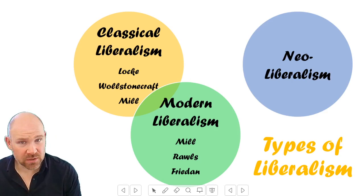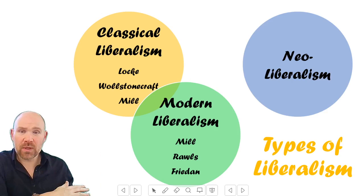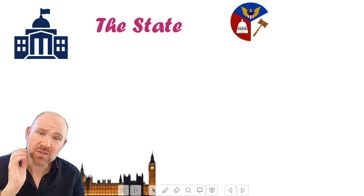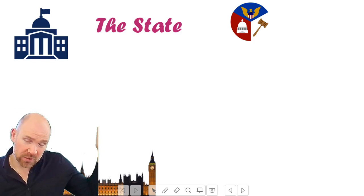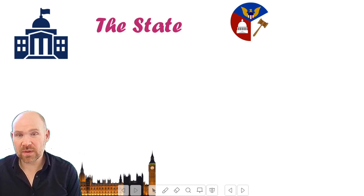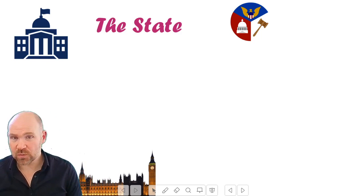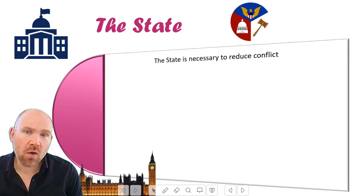Most of the questions you will be asked when it comes to political ideas will be to do with the agreements and disagreements within an ideology. There will always be huge agreement between classical and modern liberals — that's why they're both called liberals — but there will be disagreements as well. You'll be asked to discuss to what extent these agreements or disagreements are significant. The state is where we start to get our big disagreements within liberalism.